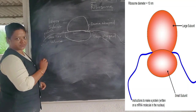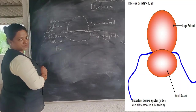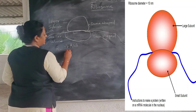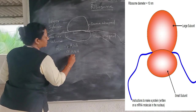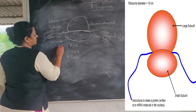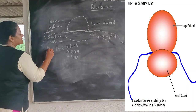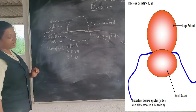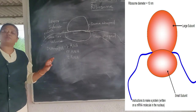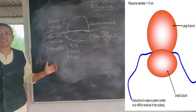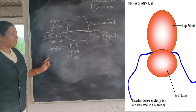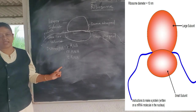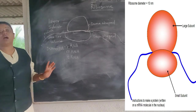RNA is of three types: rRNA, mRNA, and tRNA. RNA is made from DNA. DNA is deoxyribonucleic acid and RNA is ribonucleic acid. The difference between DNA and RNA is of only one oxygen — one oxygen is more in DNA and one oxygen is less in RNA.